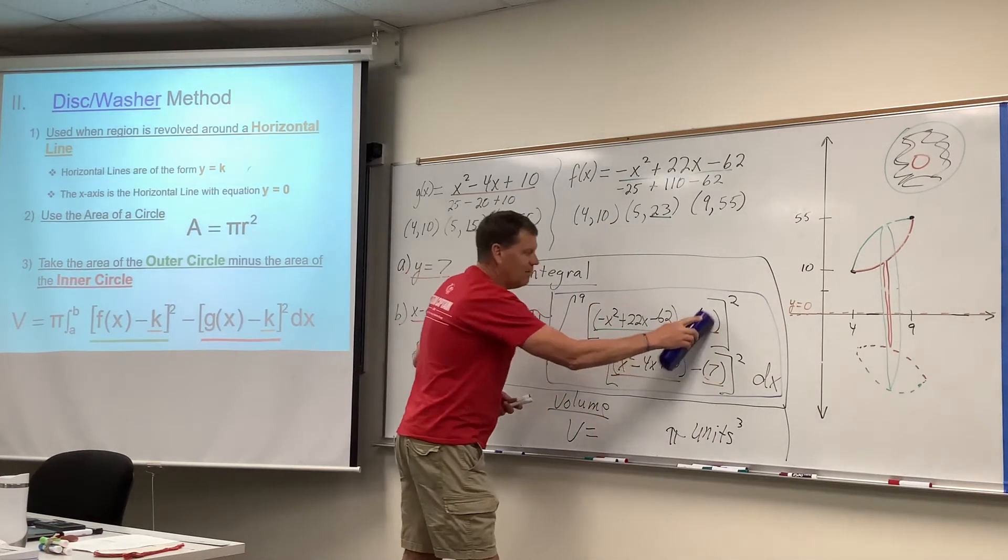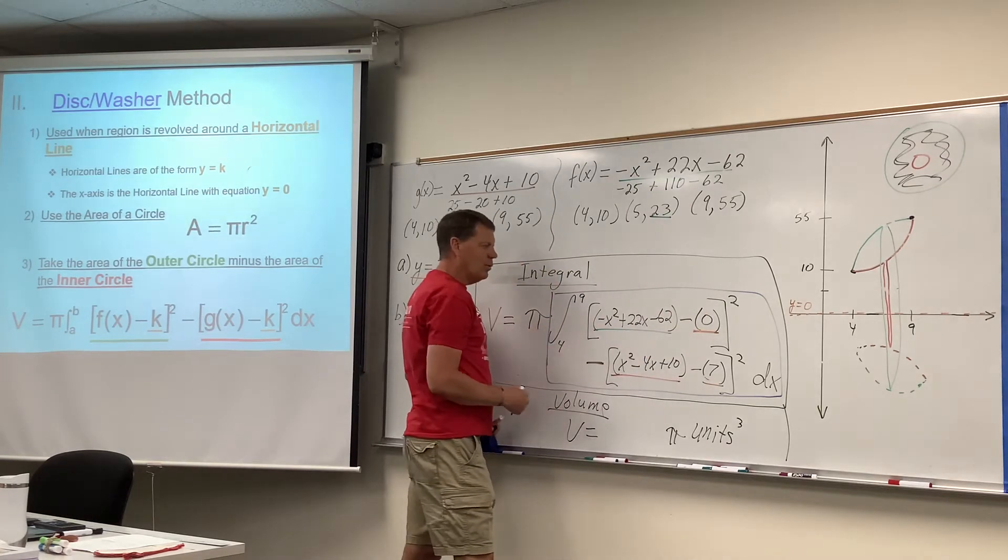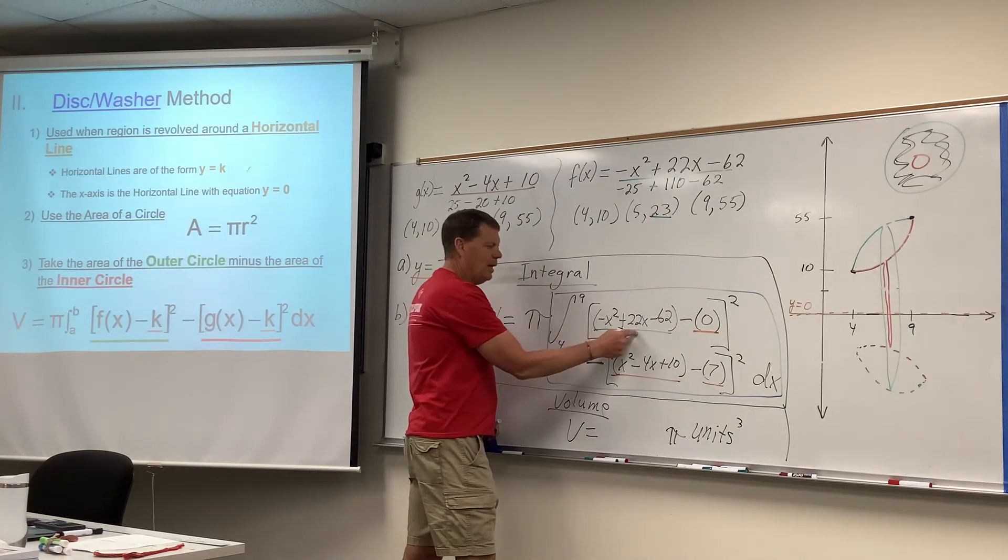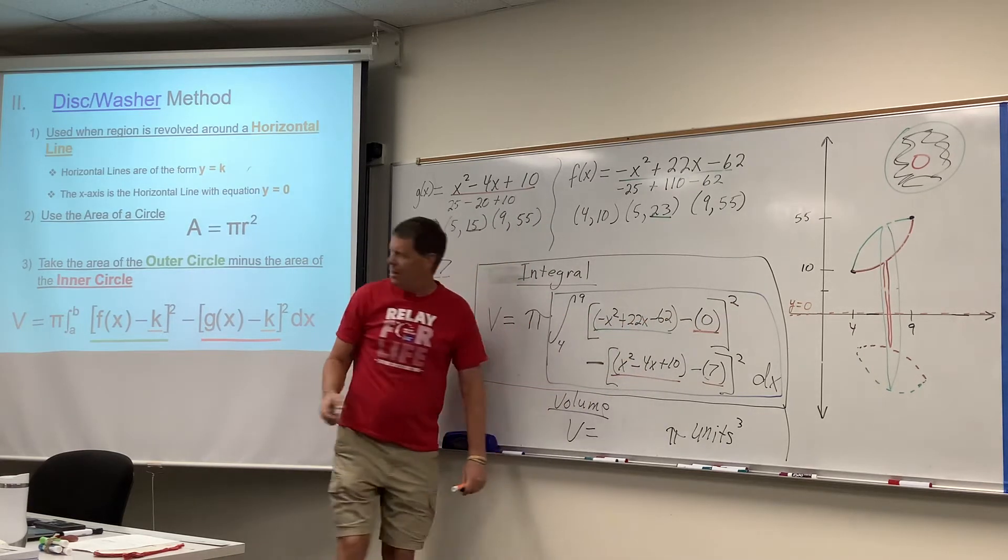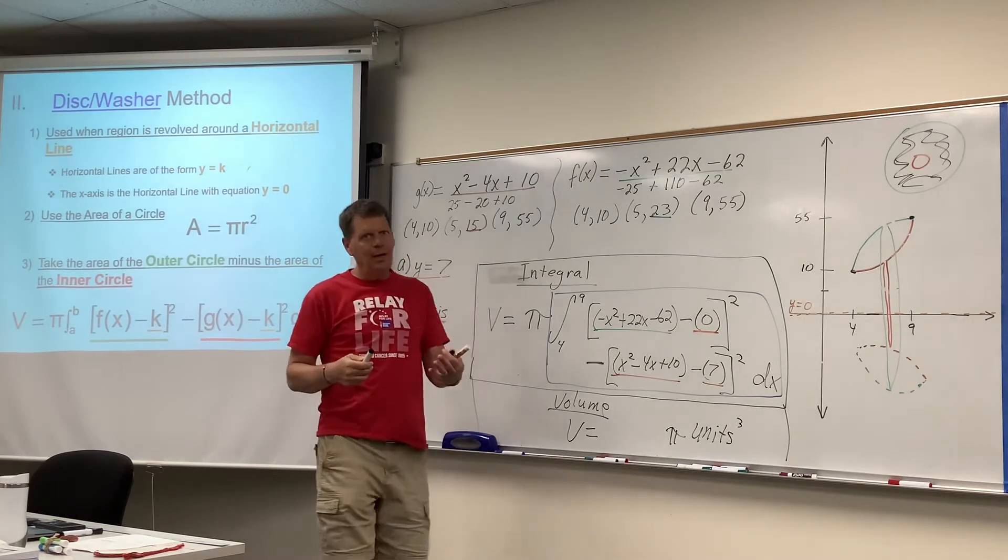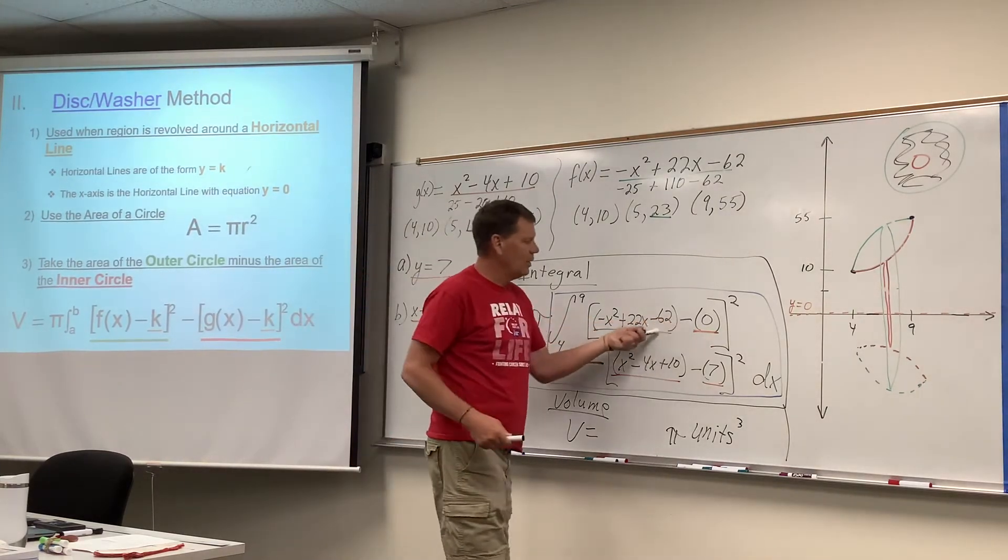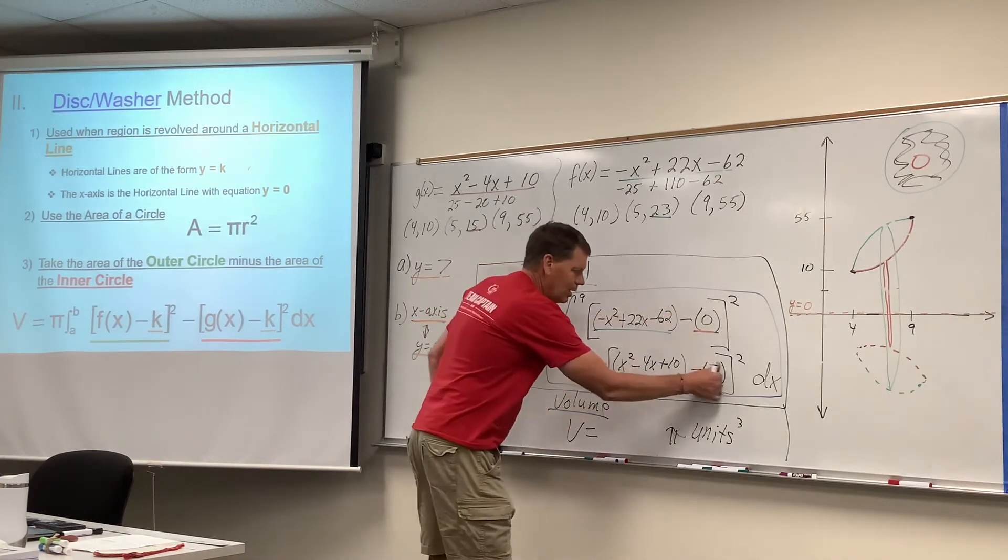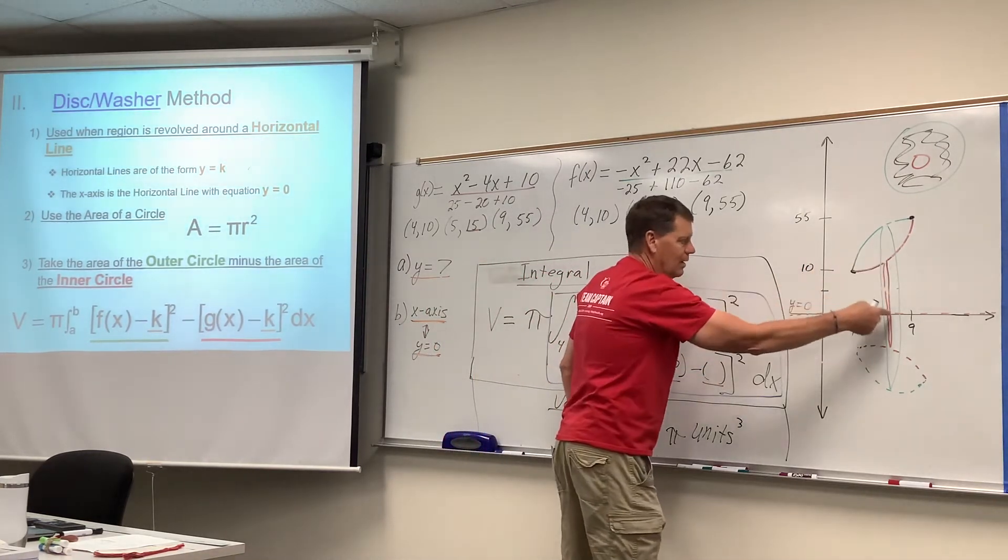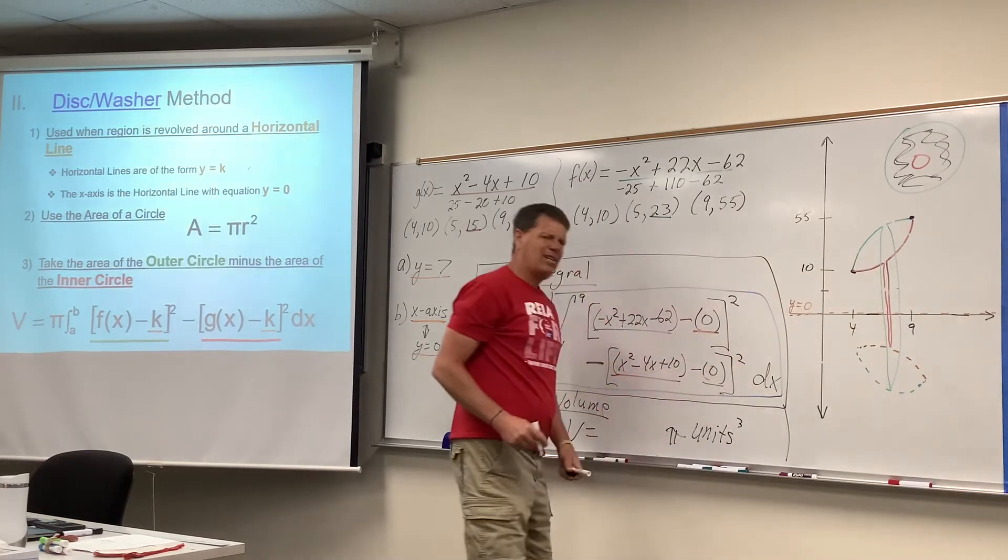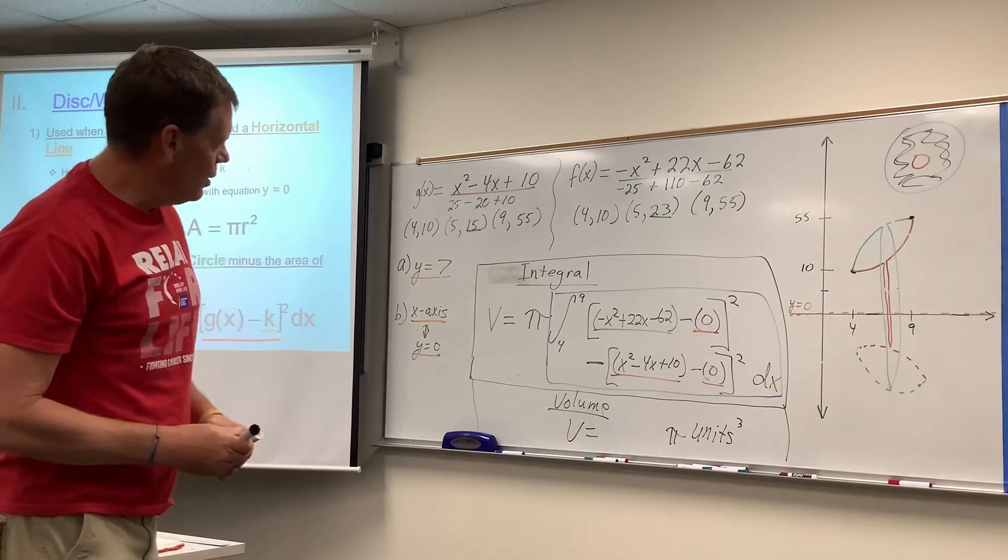So instead of subtracting 7, we'll subtract 0. The outside circle will have a radius of outside curve minus 0. And then remember squared is here because that's just part of the formula for the area of a circle. We've got our pi out front, radius of the outside green circle squared. Similarly, the inside red one would be the distance from the red curve down to the axis of revolution. There's a new axis of revolution in town. That's all that changed here. Changed those 7s into 0s.